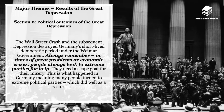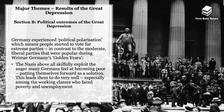The Wall Street crash and Great Depression essentially destroyed Germany's short-lived democratic period under the Weimar government. In times of economic crisis, people tend to look to extreme parties for help, needing a scapegoat to escape misery — and this is exactly what happened in Germany. There was political polarization as people voted for extreme parties rather than the moderate liberal parties popular during Weimar's golden years. The Nazis above all exploited the anger Germans felt at becoming poor and put themselves forward as a solution.